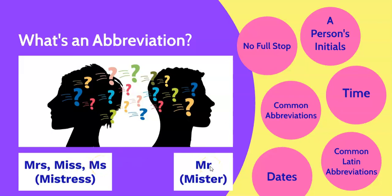The abbreviation Mr originally came from the word Master. In the UK, if the last letter of the abbreviation is the same as the word it comes from, we don't use a full stop after the abbreviation.